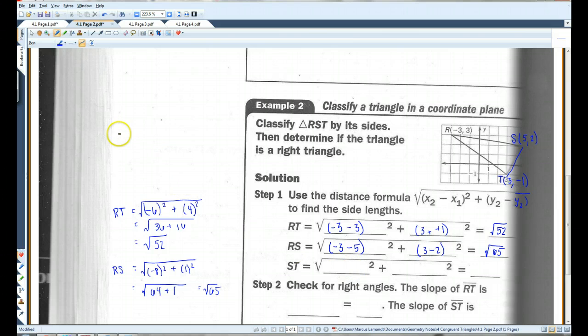And the last one I'm going to put up here, because I ran out of room. ST, that's this side here, I've got 5 minus 3 squared, and 2 minus negative 1 squared. Once again, the minus negative becomes a positive. So, 5 minus 3 is 2. 2 plus 1 is 3. So, I've got 4 plus 9, which is root 13.